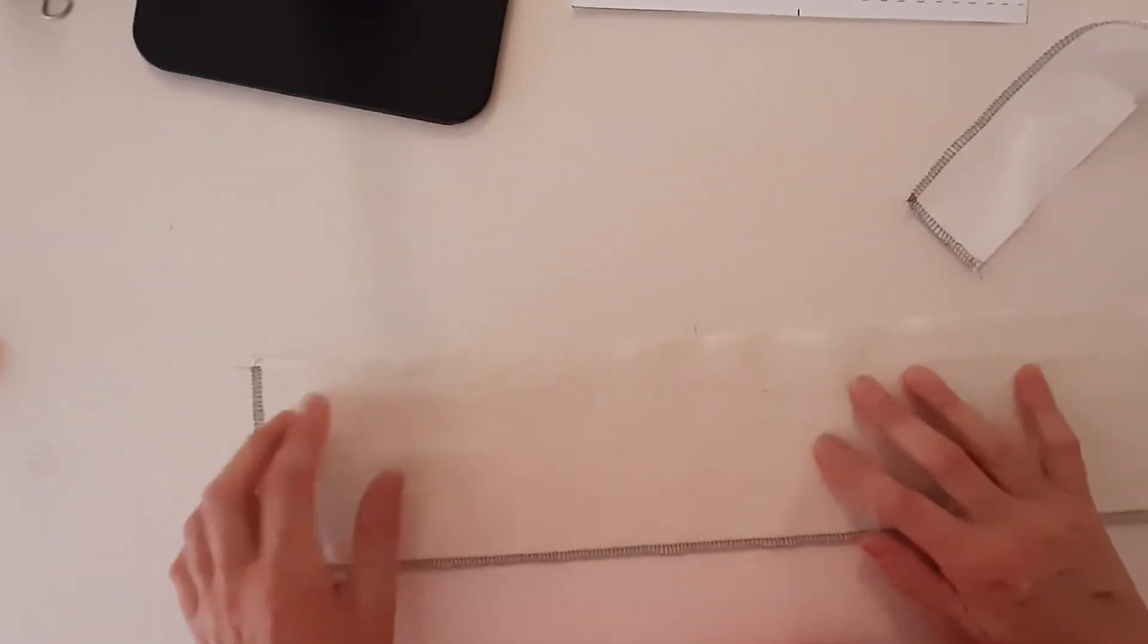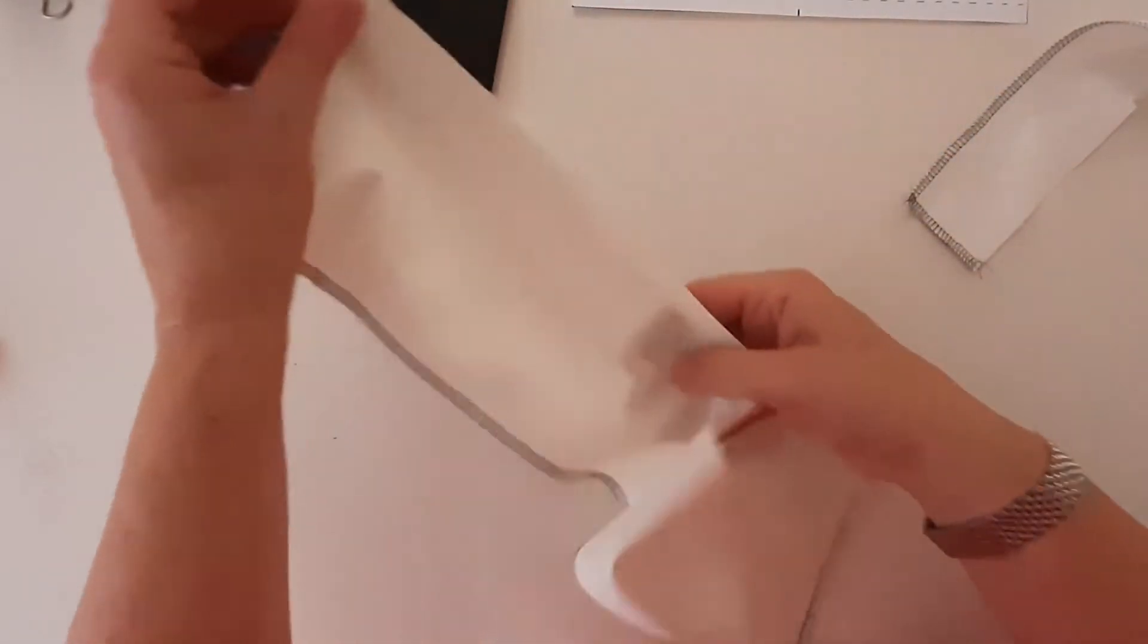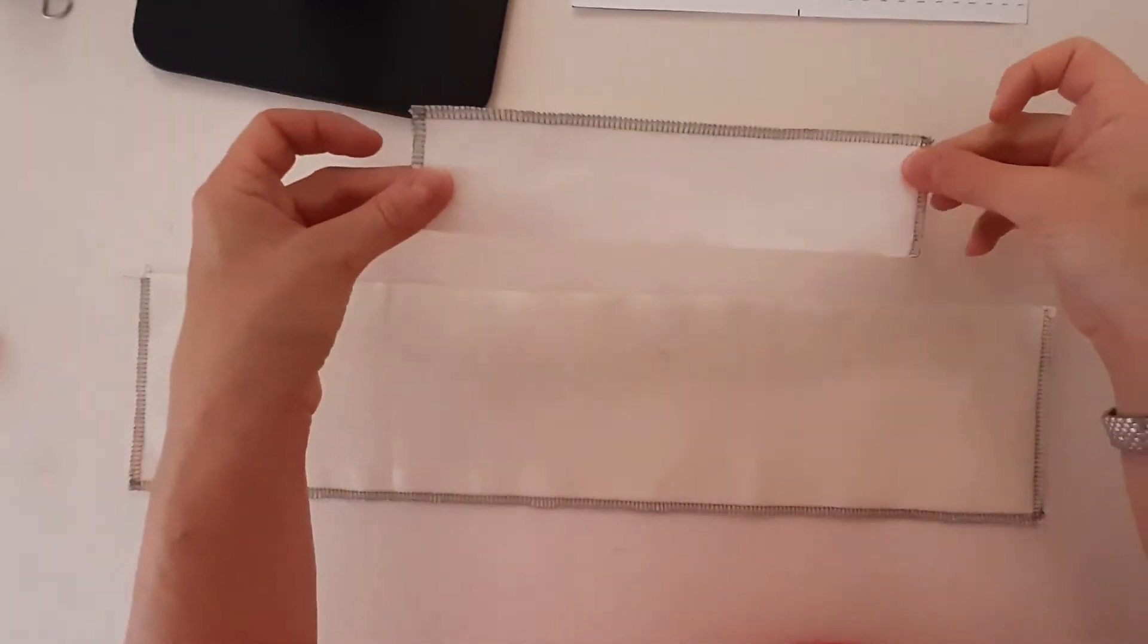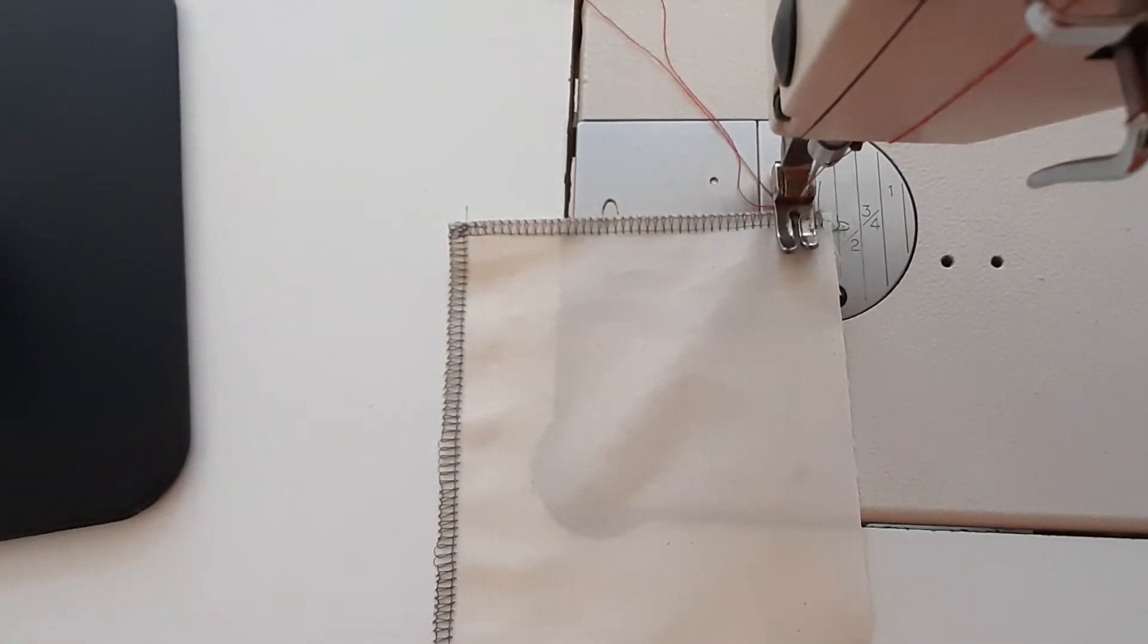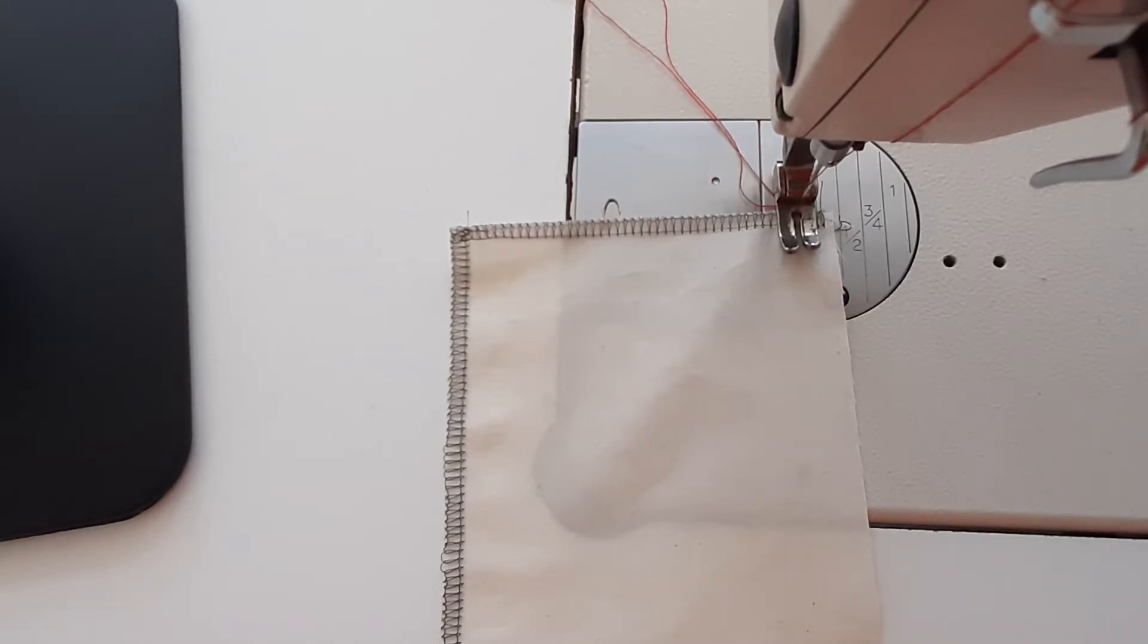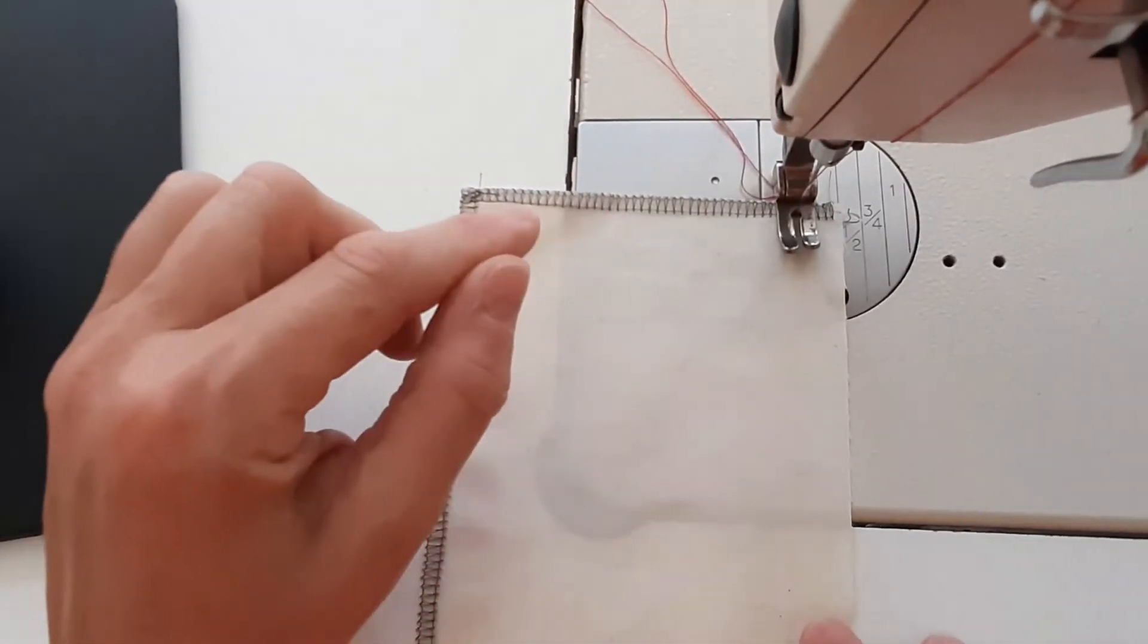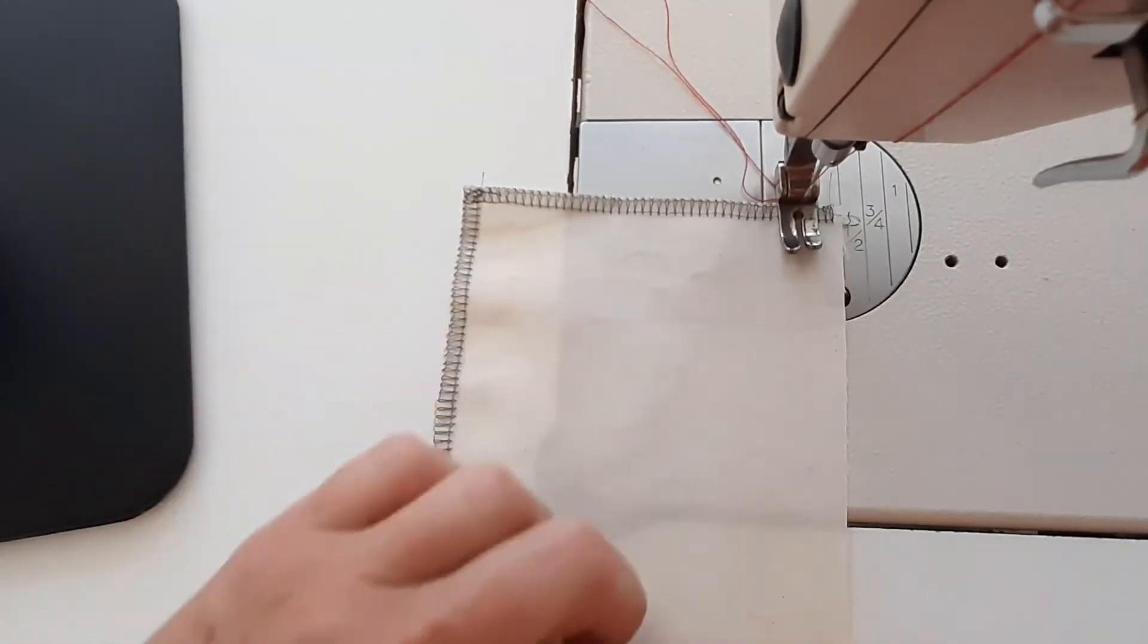Our next step will be to run a basting stitch on the gathered piece only with a half an inch seam allowance from beginning to end right across. Remember, do not lock the stitch at the beginning or the end because we're going to use this to actually gather to fit into the foundation piece. When you're doing a basting stitch, you're going to turn your stitch length up so that you have a longer stitch. If you're using an industrial machine, you can turn it to a four. If you are using your home sewing machine, you'll have to look at the manual if you don't know how to increase the stitch length. I'm going to put it under a half an inch. And remember, basting stitch is temporary so I can take it out after. I'm not going to lock it at the beginning or the end. I'm simply going to run a stitch all along.